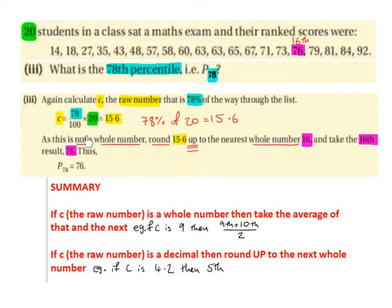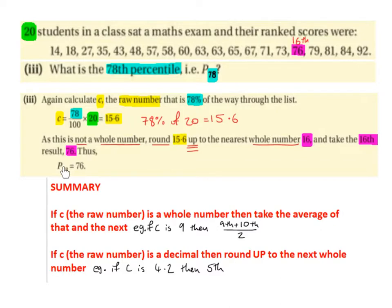As this is not a whole number, we round 15.6 up to the nearest whole number. We always round up with percentiles, no matter what is after the decimal. So we round up to 16 and take the 16th result, which is 76. Counting along, our 16th result is 76. Thus, P78, the 78th percentile, is 76.